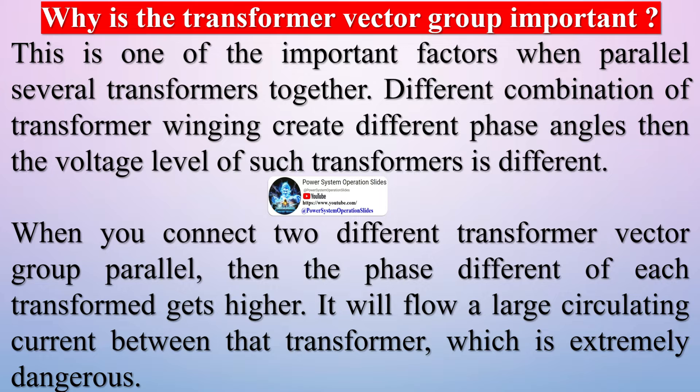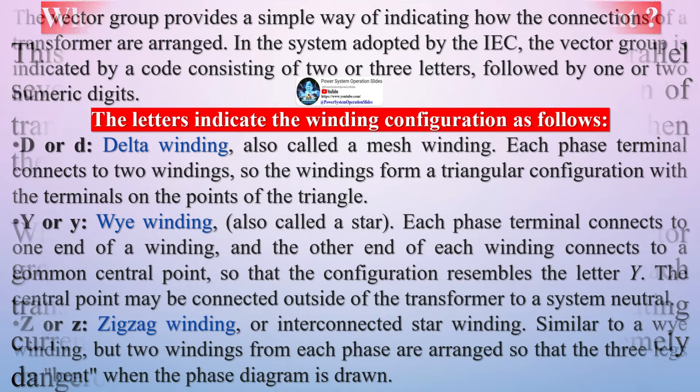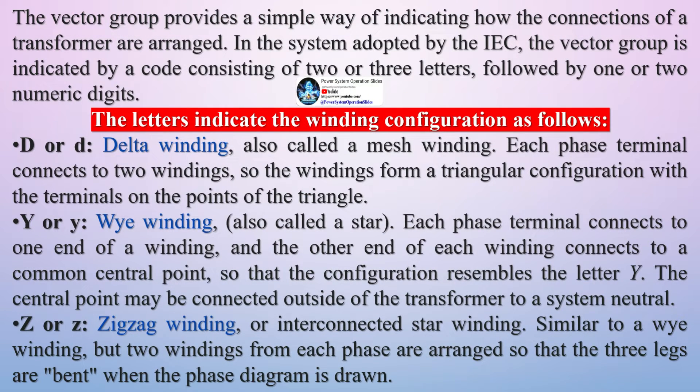2. D or D-delta connection. The polarity end of one winding is connected to the non-polarity end of the next.